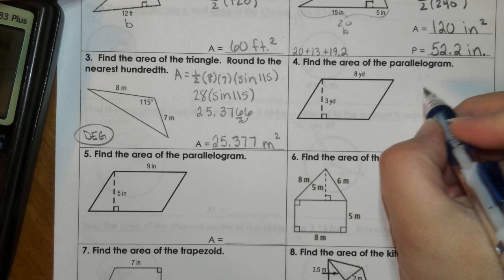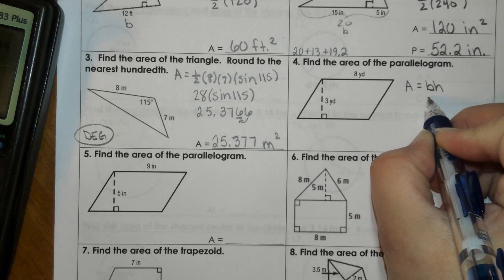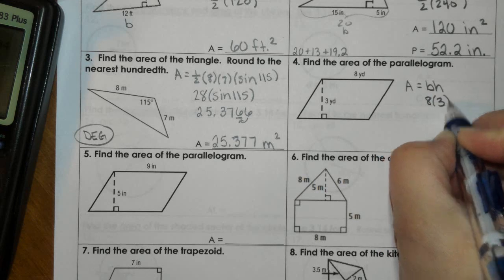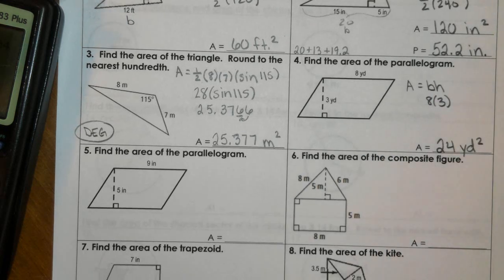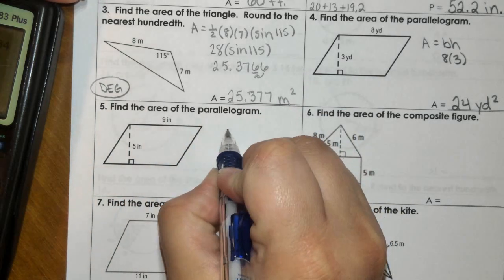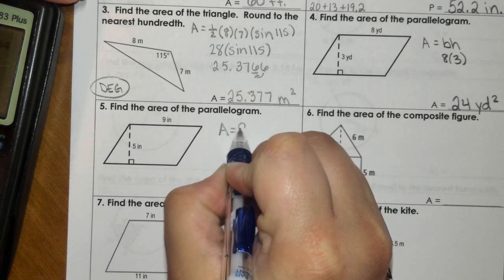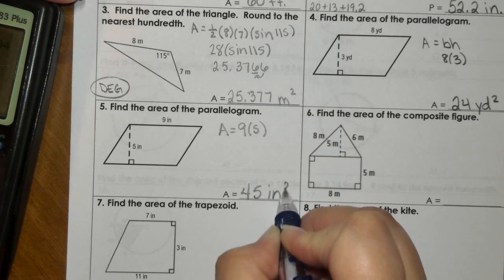Number four, we have simply base times height. So 8 times 3, that's 24 yards squared. And number five, another parallelogram. So again, base times height, so 9 times 5. So 45 inches squared.